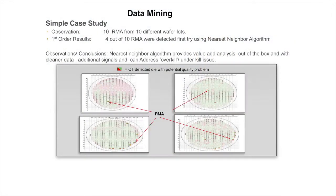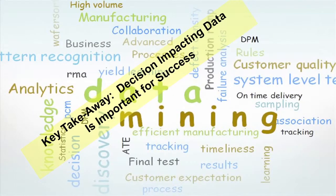A simple case of data mining: we had ten RMAs from ten different wafer lots, all randomly distributed — no correlation. But when we applied a nearest neighbor algorithm straight out of the box, four of the ten RMAs correlated the first time. When we tuned the algorithm a little bit, we got six out of ten to correlate. The key takeaway: decisions impacting data are important for success. If you can't make good decisions, the value of your data is meaningless. Value is in how good you can make your decisions.